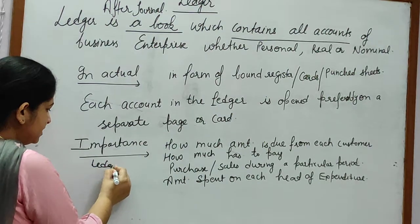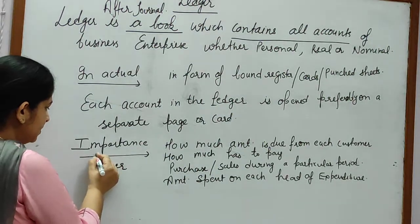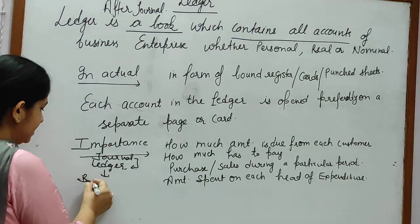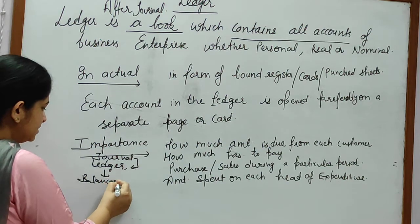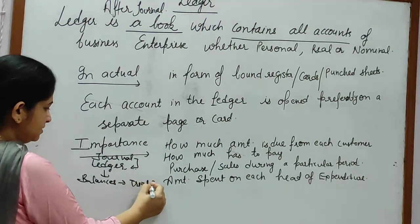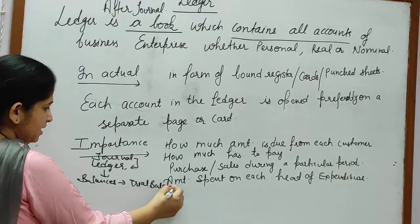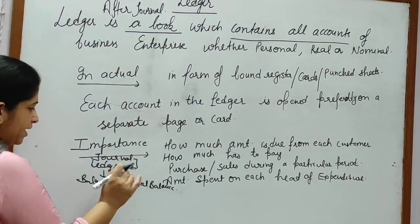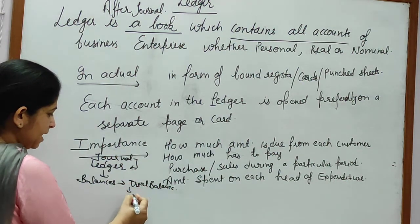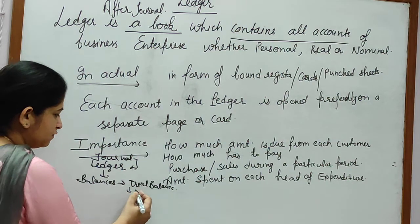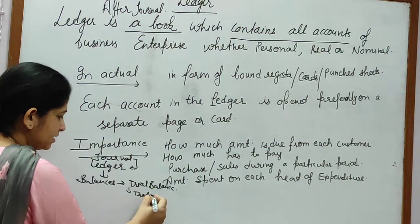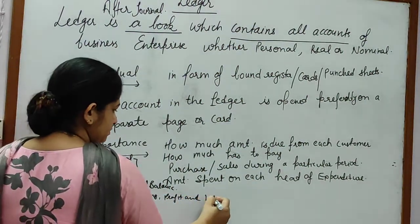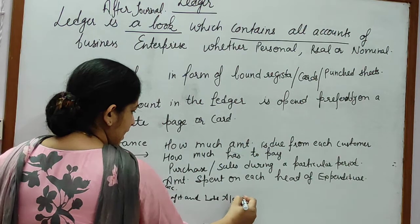First you prepare the journal, then after journal comes the Ledger. From the ledger balances, you prepare the trial balance. If the debit and credit side of the trial balance are equal, it means that the ledger in general is okay. From the trial balance you then prepare the trading, profit and loss account and balance sheet.